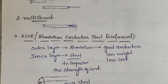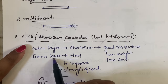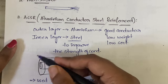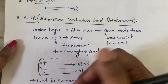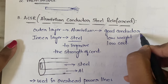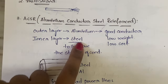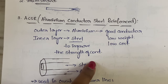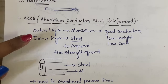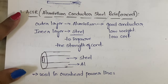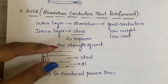Next is ACSR — Aluminum Conductor Steel Reinforced. In ACSR, the outer layer is aluminum and the inner layer is steel. Aluminum is used in the outer layer because it is a good conductor with low weight and low cost. Steel is used in the inner layer to improve the strength of the conductor. ACSR is mainly used in overhead power lines.